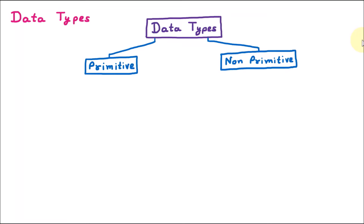We are learning about data types. Data types signify which type of data we are going to store into a variable. In Java, there are two types of data types: the first one is primitive and the second one is non-primitive. Primitive means intrinsic or built-in — these are data types already available in the system library. They are called intrinsic or primitive data types.